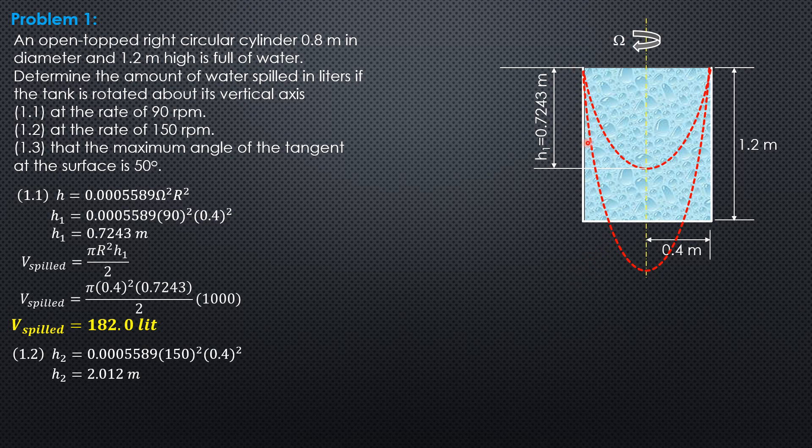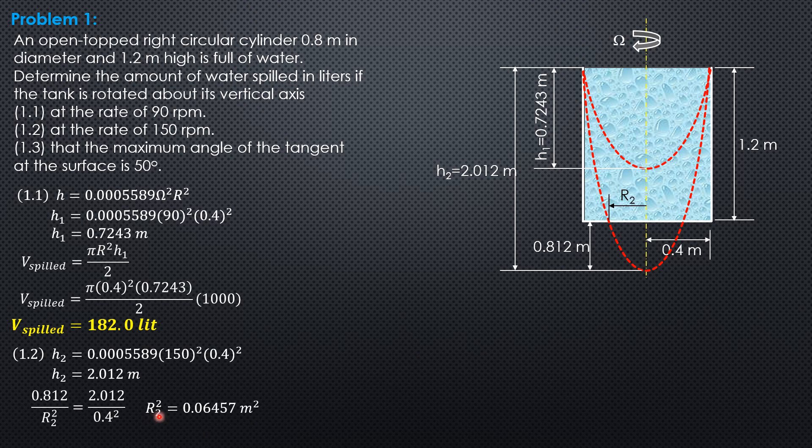But the volume spilled is represented by this paraboloid of revolution with 2 bases and we have a direct formula for that. So this is 2.012 meters minus 1.2. So meaning to say this height, we'll call that R2 and we'll call this height 0.812. 2.012 minus 1.2 is 0.812 meters. By squared property of parabola, we can solve for R sub 2. So 0.812 as to R sub 2 square equals 2.012 as to 0.4 square. So R2 square is equal to, I'm computing for R2 square, not R sub 2. So 0.06457 meters square.